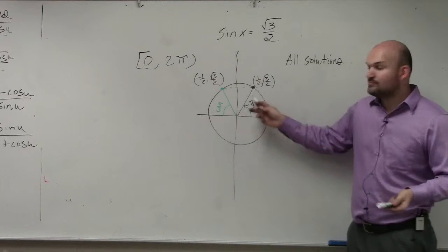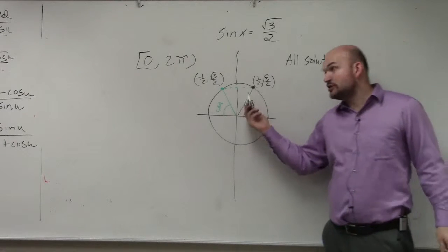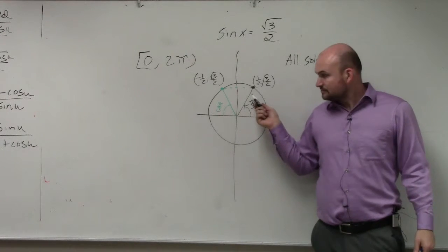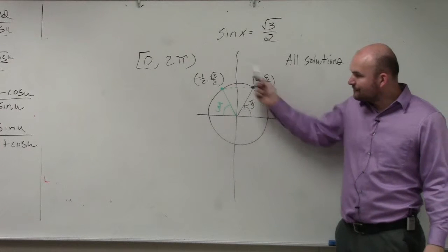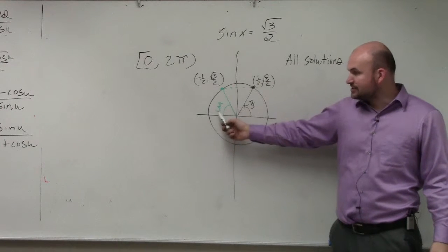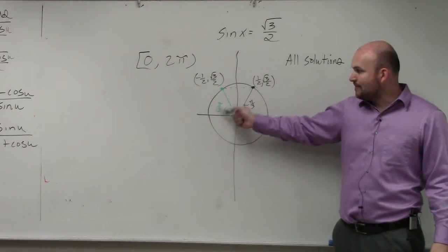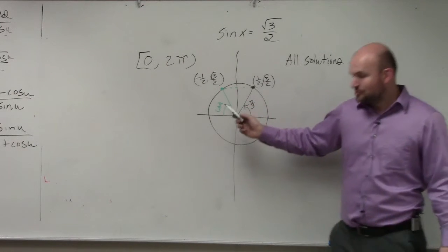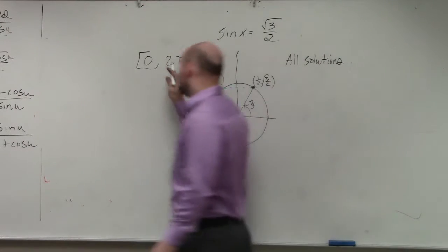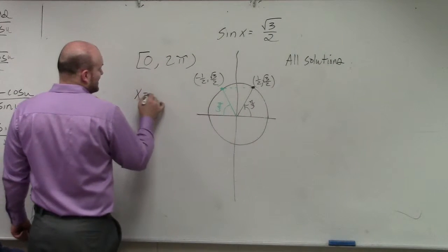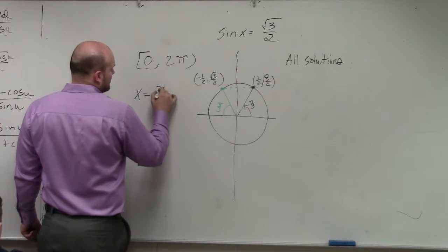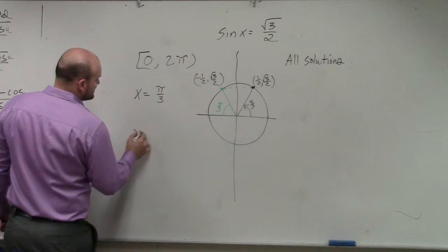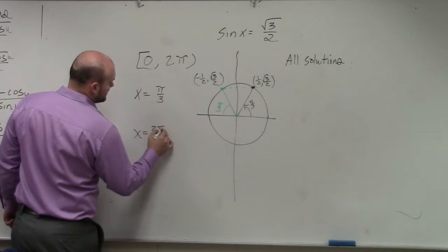Now we just need to figure out what this angle is. You should know the first quadrant point. If we know halfway around the circle is π, and we're a π over 3 short, therefore we're at 2π over 3. So the answer to this problem is x equals π over 3 and x equals 2π over 3.